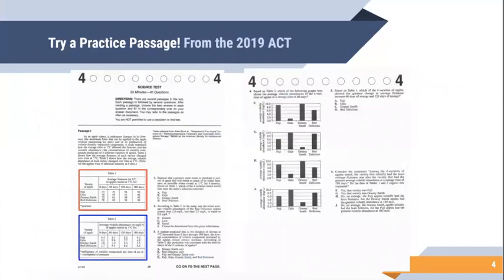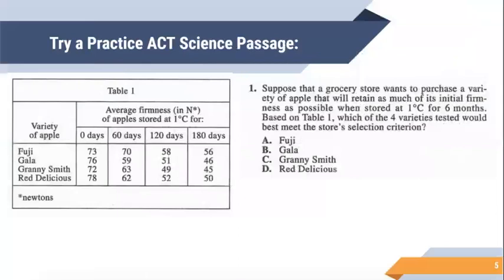This is a picture of the passage we're going to try today — it's from the 2019 ACT. It has table one and table two. I would recommend doing all the questions about table one first, then all the questions about table two, and then the questions about both tables. Only one of the questions is about both. If you do all the table ones and then all the table twos, you're less likely to get confused and you'll probably be more efficient.